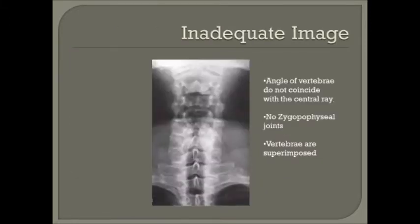Here's a radiograph of an image that does not have a central ray that coincides with the lordotic curve. As you can see, the bodies overlap and the vertebral arch structures are not visible.